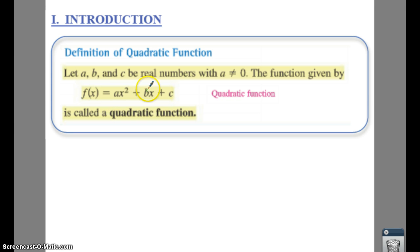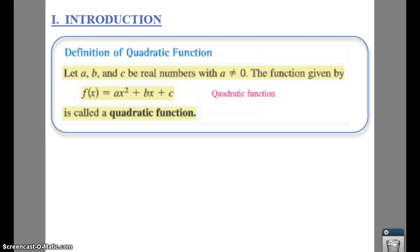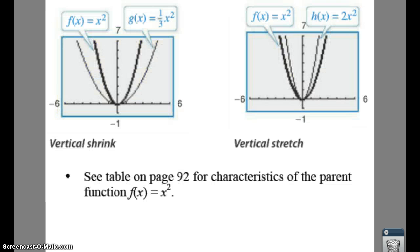Whenever you have a quadratic function, you have the equation f(x) = ax² + bx + c. This is called your quadratic function, where a, b, and c are real numbers.